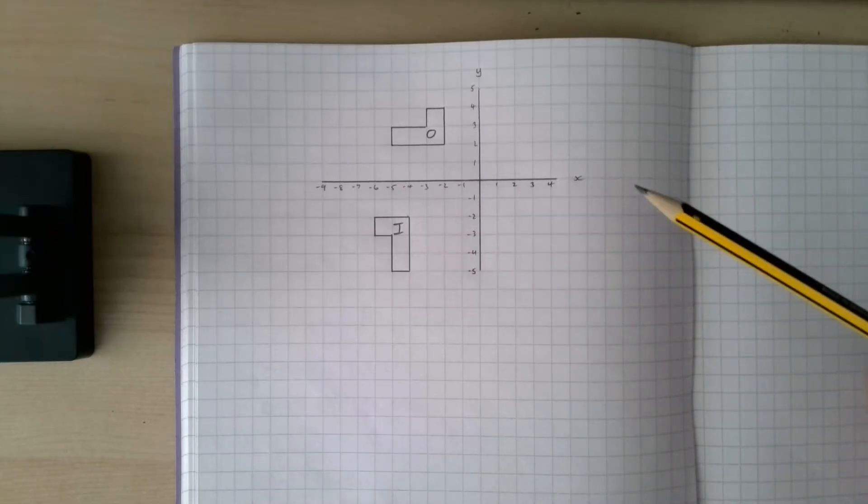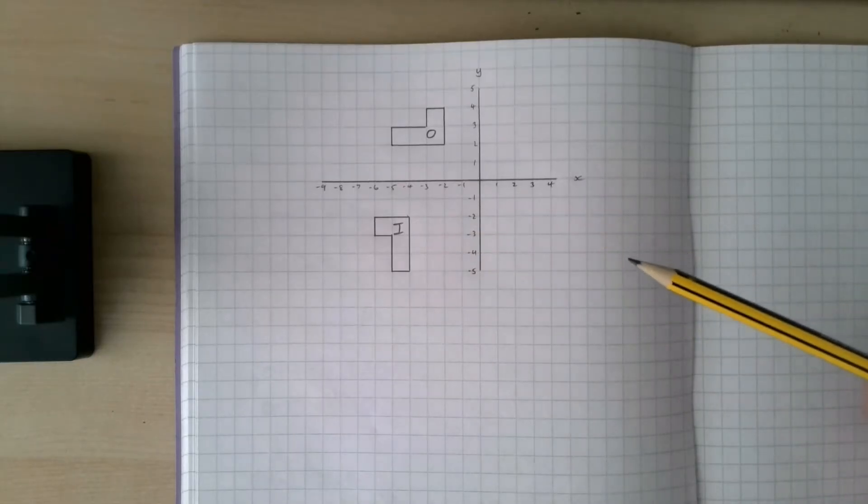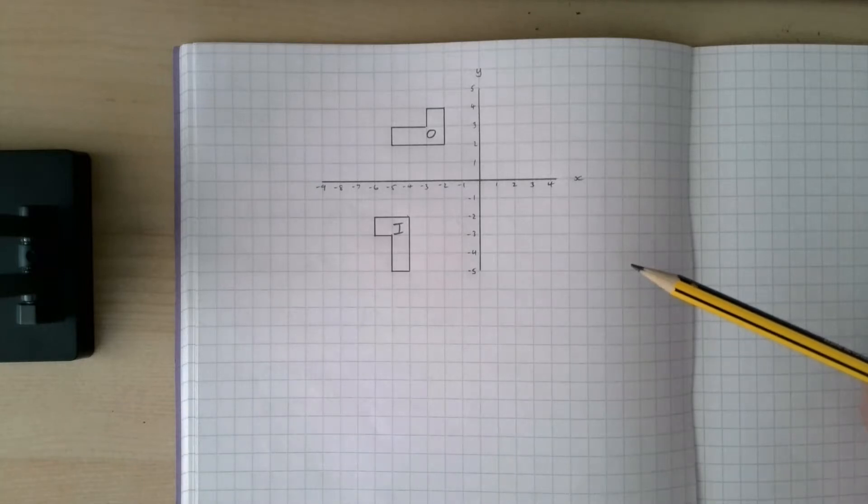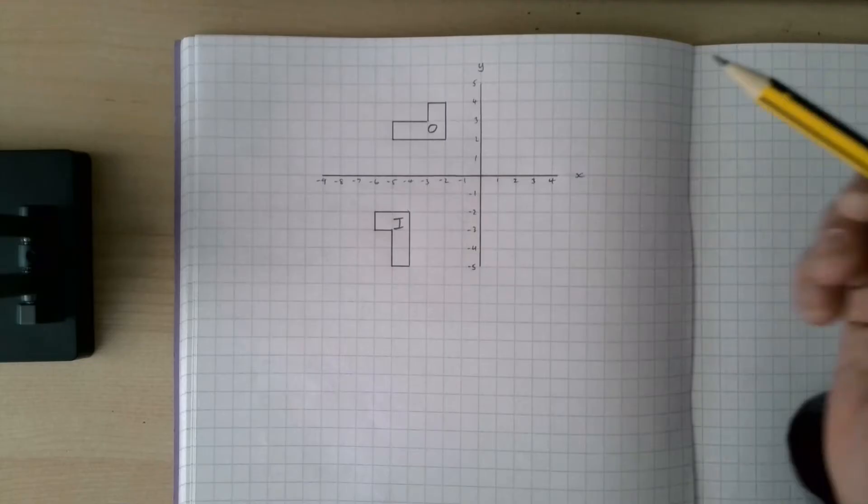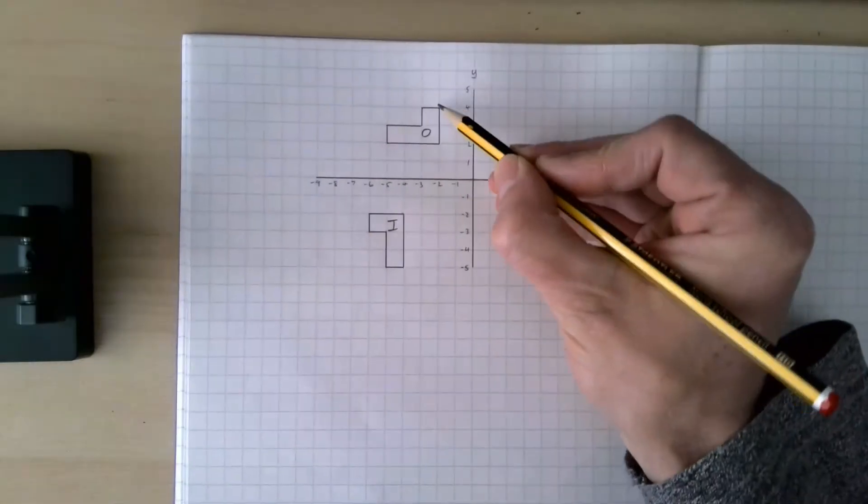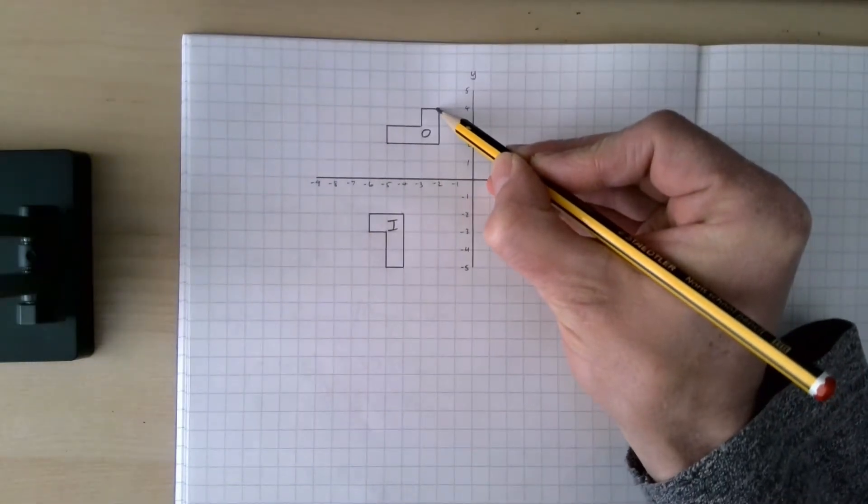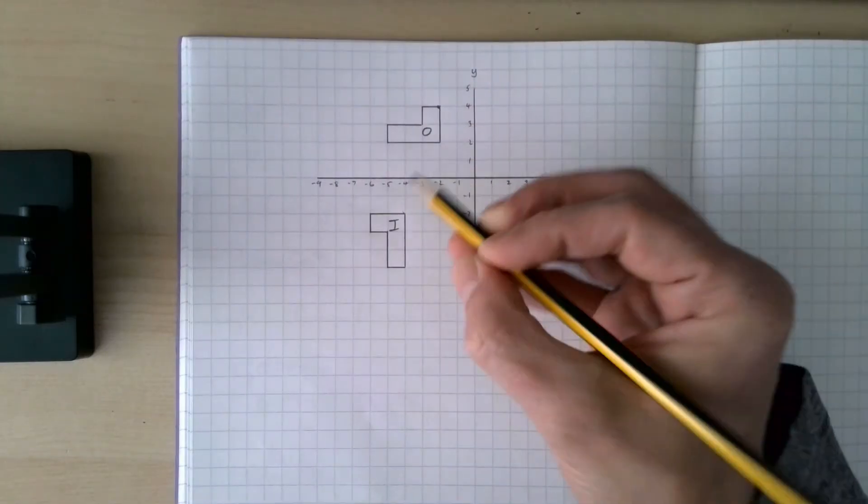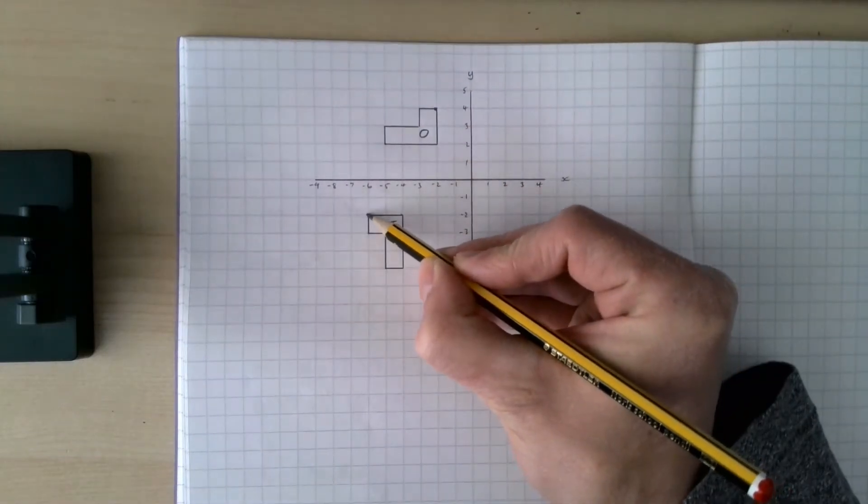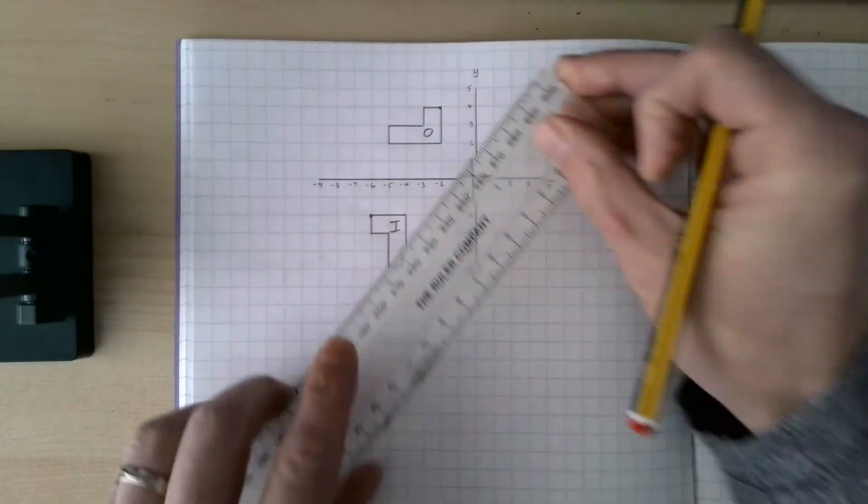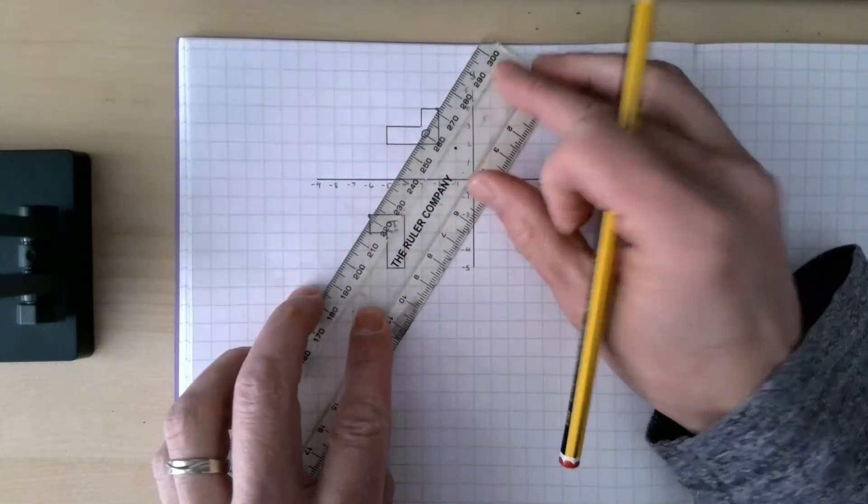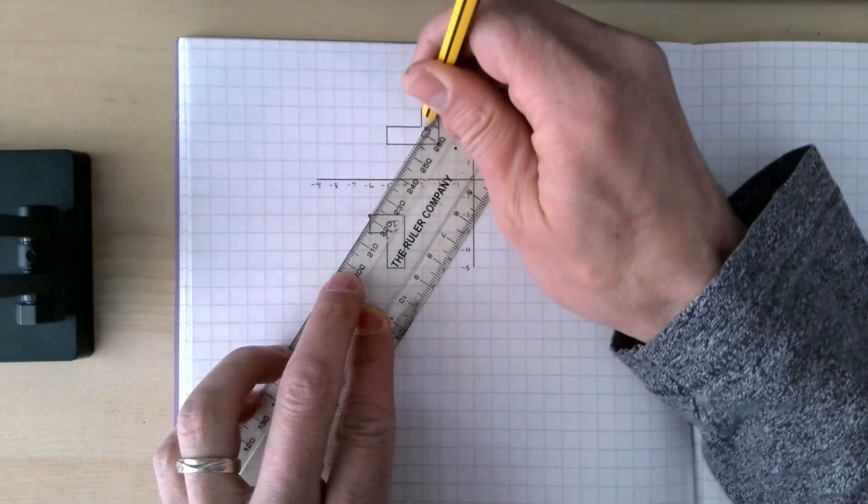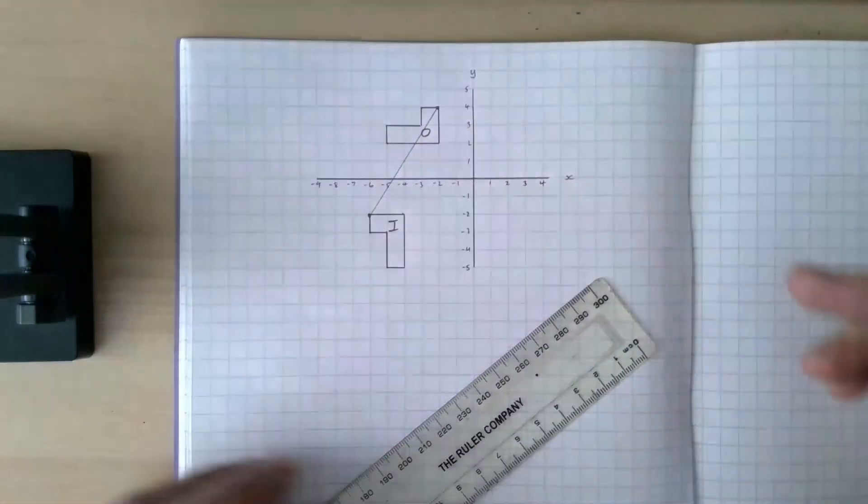We need to find the center. What you want to do is find two corresponding points on the shapes. If I look at this corner here of the object, I need to find the same corner on the image, which is that one. So I draw a line between the two points there.